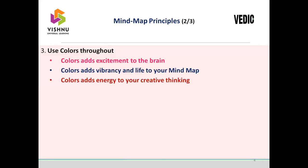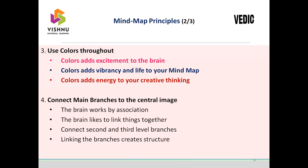Use colors throughout. Color adds excitement to the brain, adds vibrancy and life to your mind map, and adds energy to your creative thinking. Connect main branches to the central image — the brain works by association and likes to link things together. Connect second and third level branches, or as many levels as possible. You can keep connecting and spanning out; linking the branches creates structure.